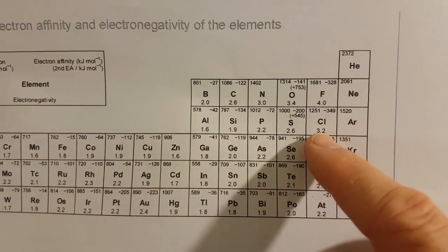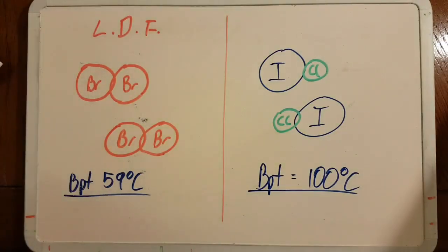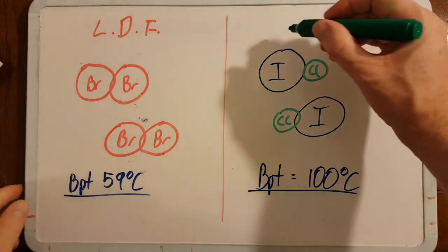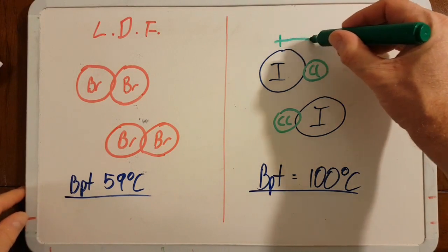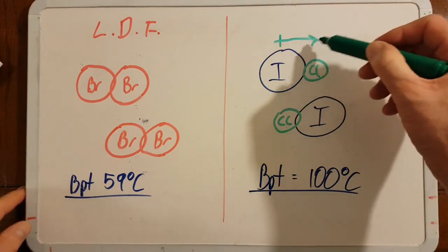You can see that iodine is 2.7 and chlorine is 3.2. The higher the number, the more electrons in the bond are attracted towards that element. So chlorine has a higher electronegativity than iodine, and to show that dipole that's formed, I'm going to draw this: that's the positive end, that's the negative end.